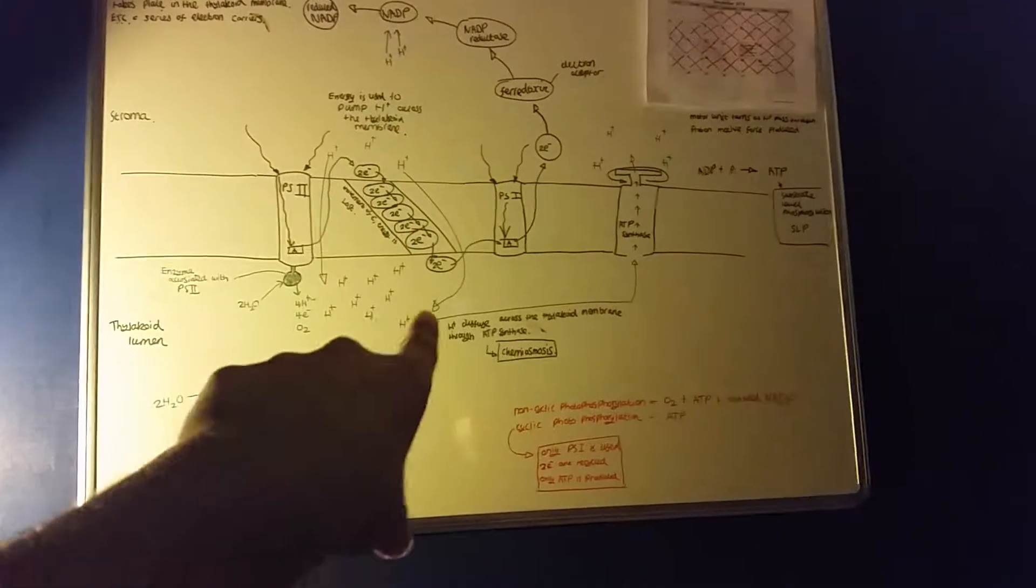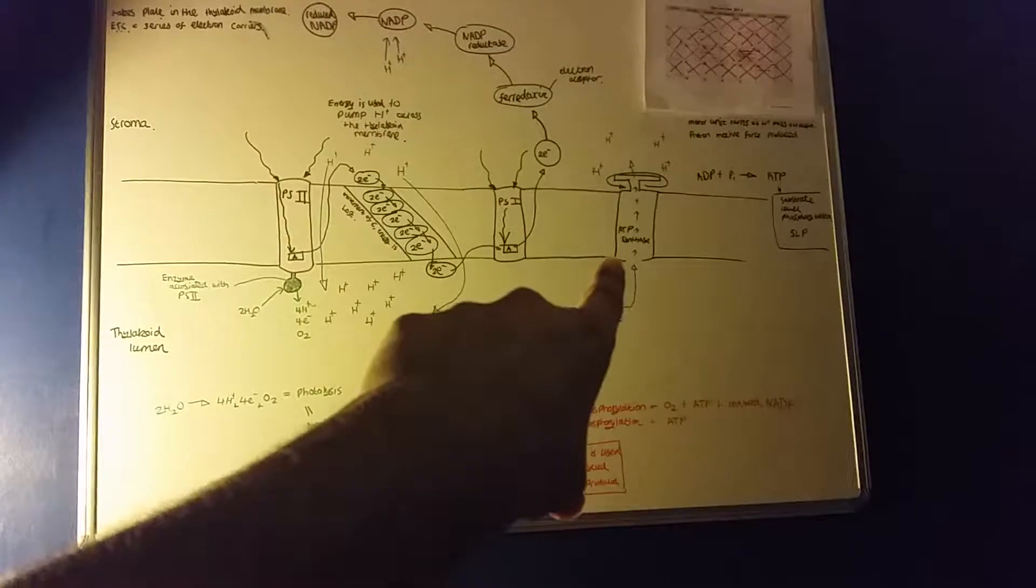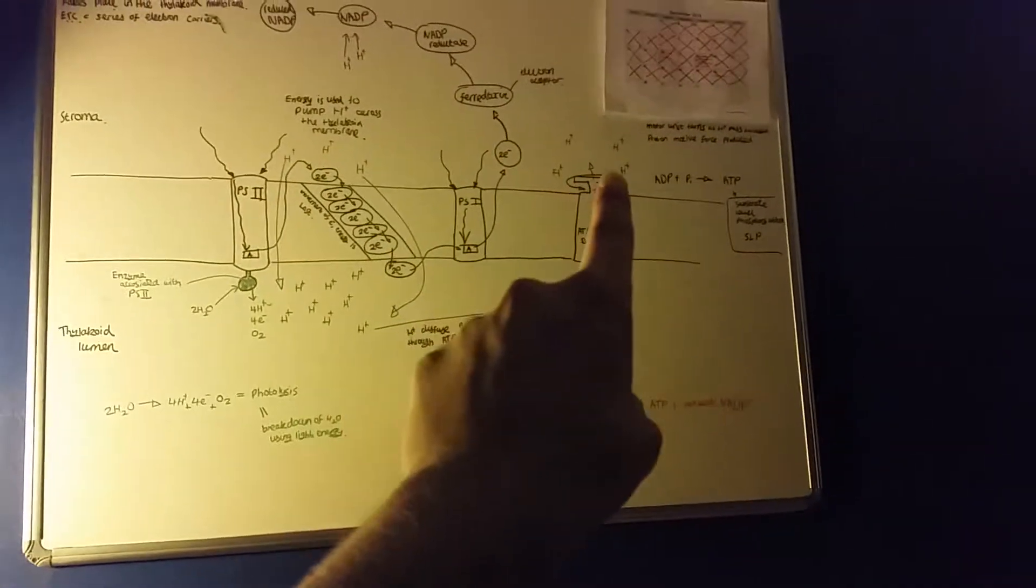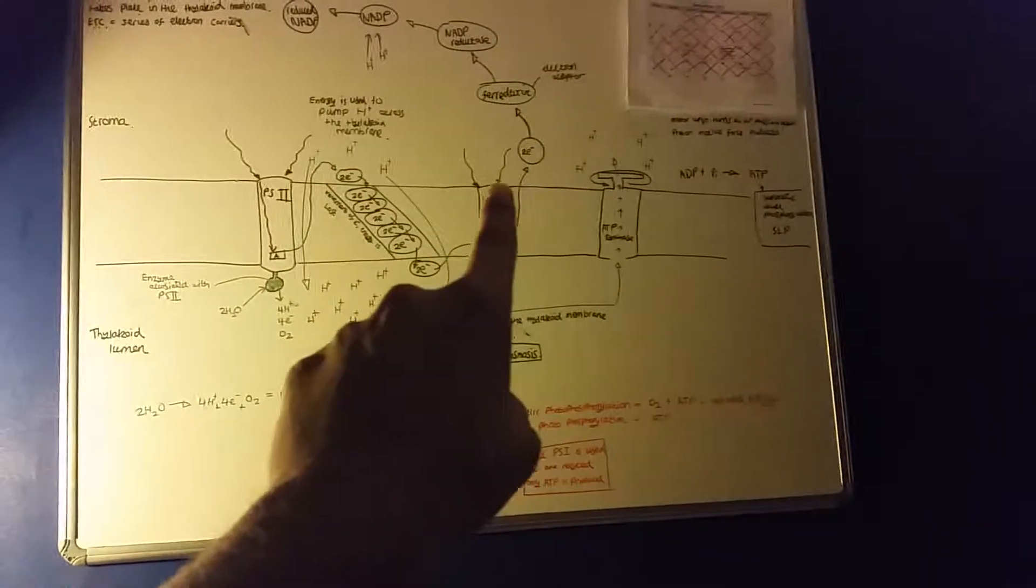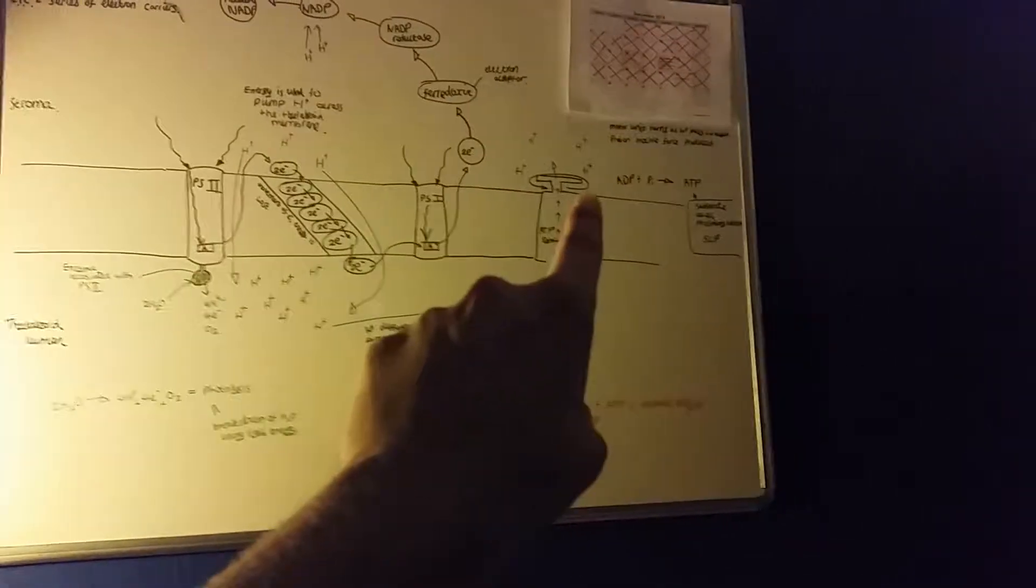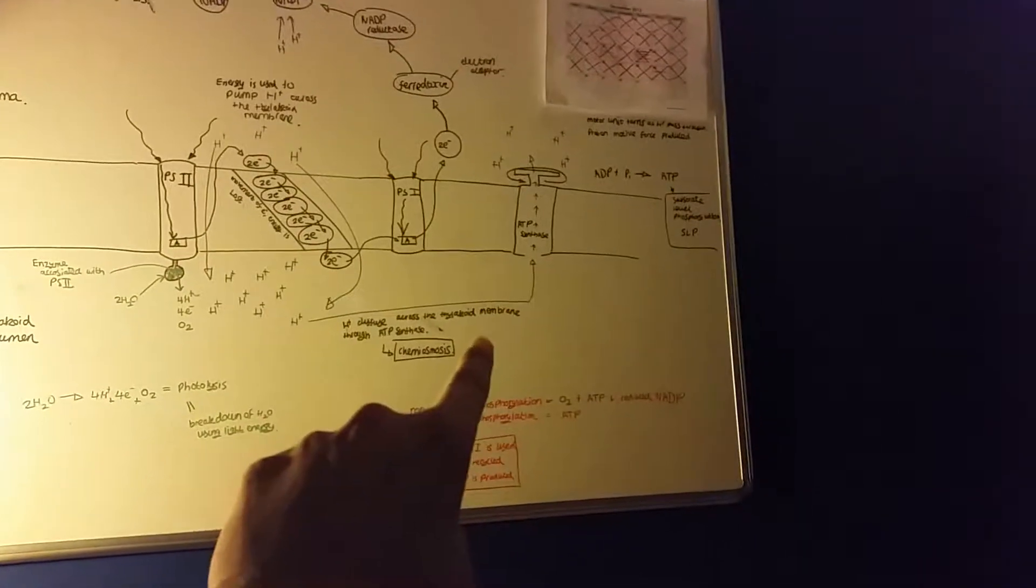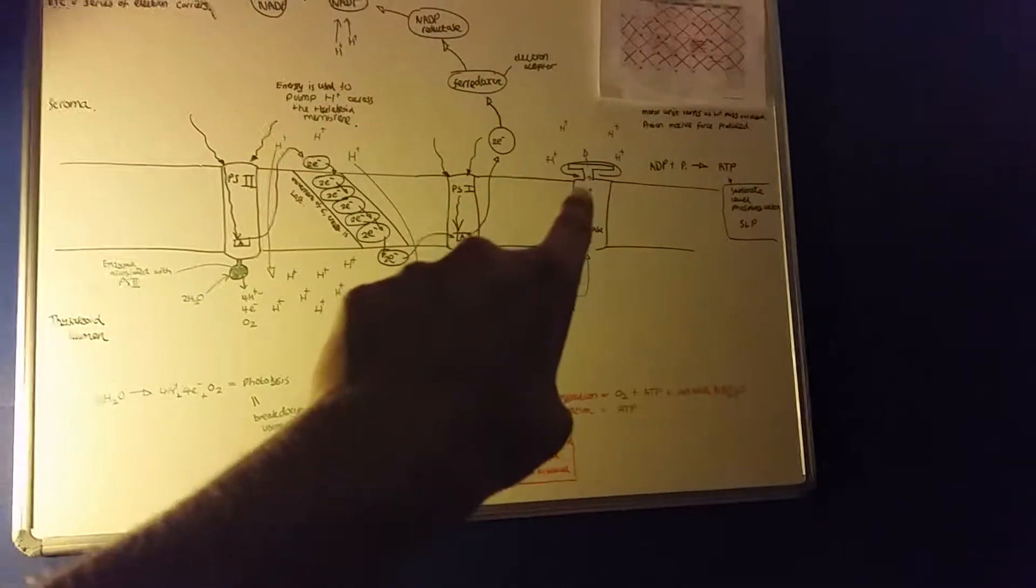As the hydrogen ions pass through ATP synthase, this turns the motor unit, generating a proton motive force which is used to phosphorylate ADP, producing ATP. The movement of hydrogen ions through ATP synthase is called chemiosmosis.